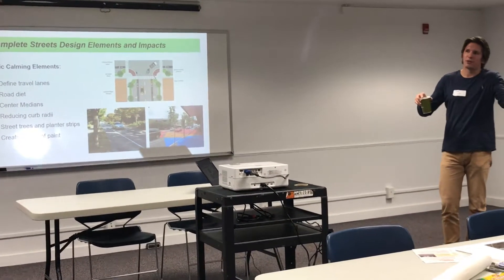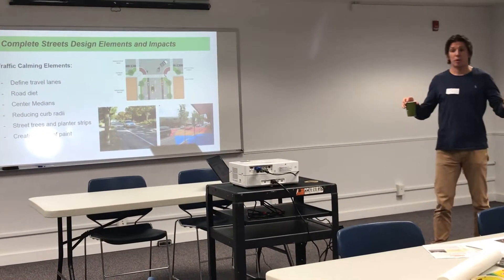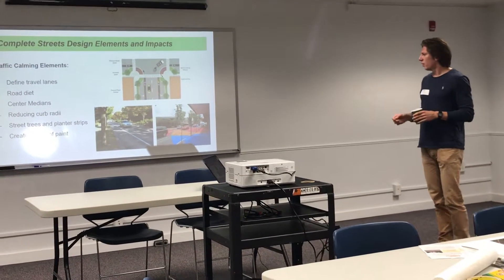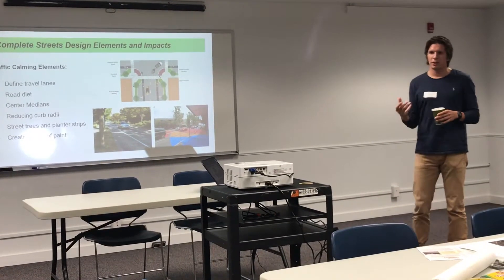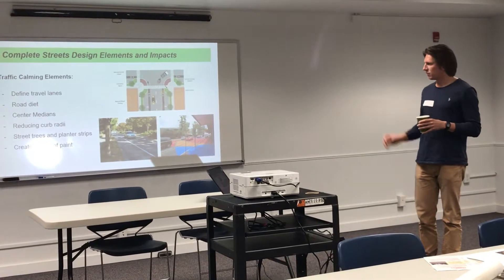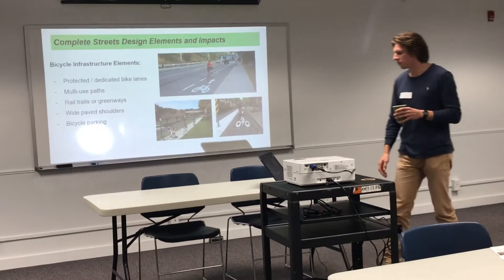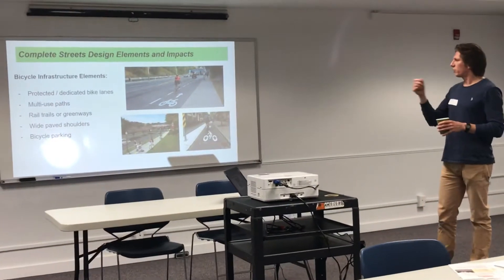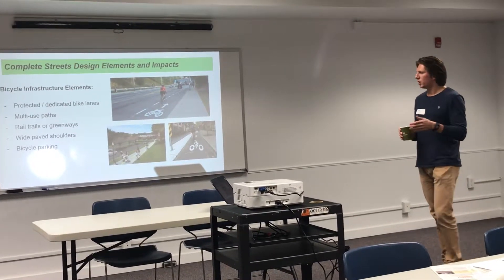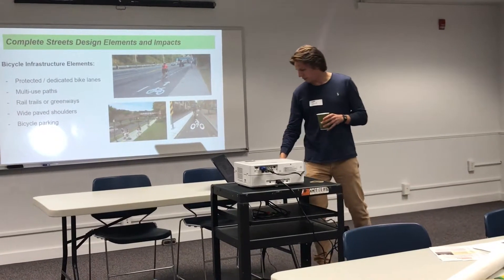Monroe Avenue is an example — it's a straight shot with not a lot of friction aside from other cars, so drivers feel comfortable going fast. If you plant trees or even use paint to make drivers feel more constricted, they may slow down. Studies show these strategies do work. Bicycle infrastructure elements are more obvious: protected bike lanes, multi-use paths, rail trails, wide paved shoulders, and bicycle parking.